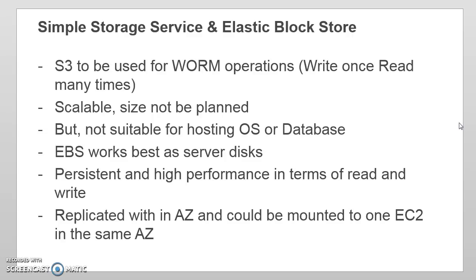EBS is the right solution for that — it works best as the disk for your servers, so use EBS with your EC2. EBS volumes are persistent in nature: even if you stop your EC2 instance, the data on EBS is not lost. Depending on the type of EBS, you can achieve really high read and write performance. By default, an EBS volume is replicated within the same Availability Zone. Also, an EBS volume can only be mounted to one EC2 at a time, and both the EC2 and EBS volume must be in the same Availability Zone.